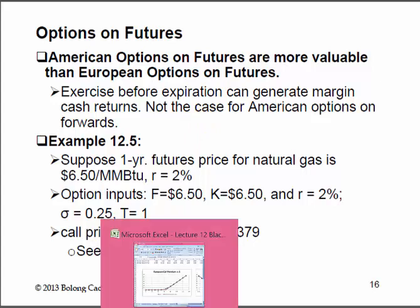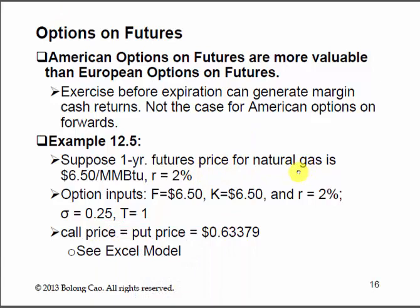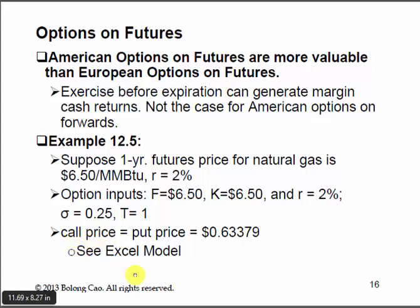Looking at the numerical example: say one year later the price of natural gas is $6.50 per MM BTU (an energy unit). The risk-free rate is 2%. The futures price is $6.50, strike price is $6.50, standard deviation of the natural gas futures price is 25%, and time is one year. We compute the call price and the put price using the Black formula.